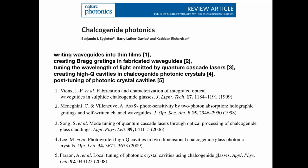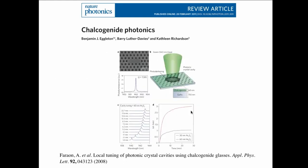There are numerous applications of chalcogenide glasses in photonics — covered in Nature Photonics reviews. You can fabricate waveguides, make holographic gratings, tune quantum cascade lasers, and make high-Q cavities. One example illustrates tuning a photonic crystal: a thin film of chalcogenide glass on top of a photonic crystal is illuminated, its optical parameters change, and the characteristic resonance frequency shifts.